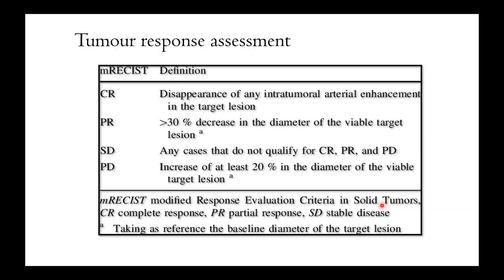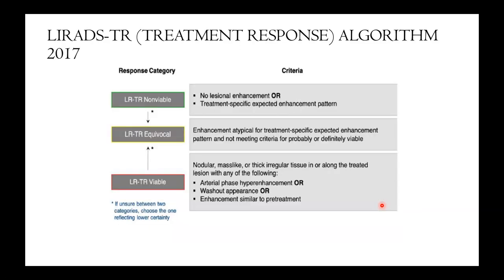Tumor response is most commonly assessed by modified RECIST criteria. Complete response is the disappearance of any intratumoral arterial enhancement. Partial response is a decrease of 30% in the diameter of the viable target lesion. Stable disease is any case that doesn't fit into complete, partial, or progressive disease. Progressive disease is an increase of at least 20% in the diameter of the viable target lesion.